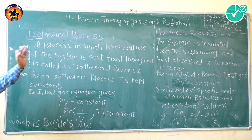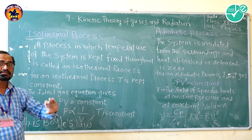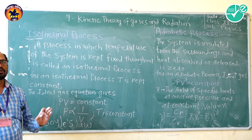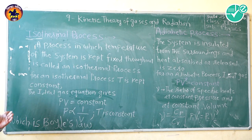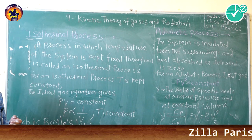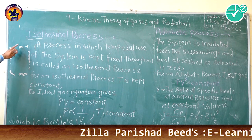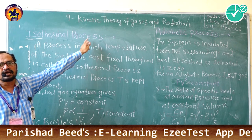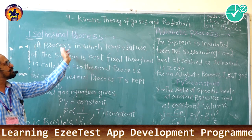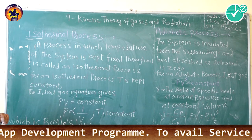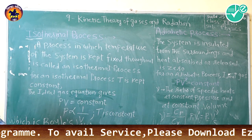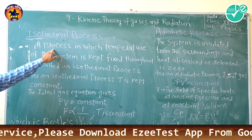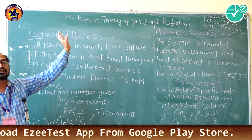That means the pressure may be changed, volume may be changed, mass may be changed, etc. Because you know PV is equal to RT, that is the ideal gas equation in which P is the pressure, V is the volume, T is the temperature of the gas system, and R is the gas constant. So if temperature is constant, that means there may be change in pressure and volume. What is the relation between pressure and volume in this isothermal process?